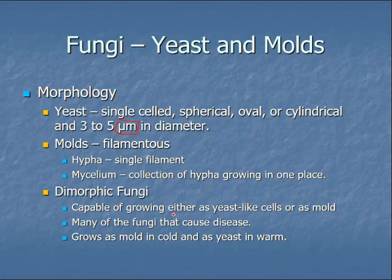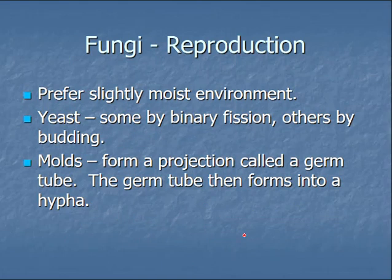Dimorphic fungi are those that can grow either as yeast-like cells or as mold. Most of the ones that cause disease are dimorphic fungi. They tend to grow as a mold in cool environments and as yeast in warm environments. We typically find these as yeast infections on people, whereas if that same microorganism were in a cooler environment, it would grow as a mold.